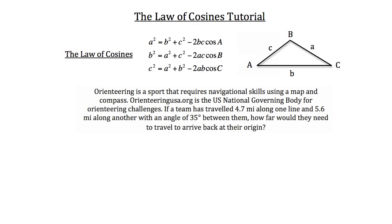Orienteering is a sport that requires navigational skills using a map and compass. Orienteeringusa.org is the U.S. national governing body for orienteering challenges. If a team has traveled 4.7 miles along one line and 5.6 miles along another with an angle of 35 degrees between them, how far would they need to travel to arrive back at their origin? The first thing you want to do is draw yourself a diagram — don't just try to solve it in your head.